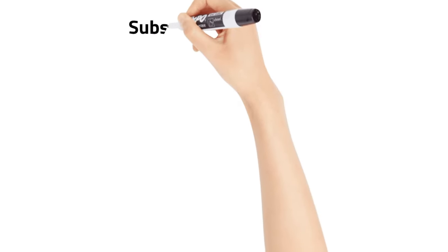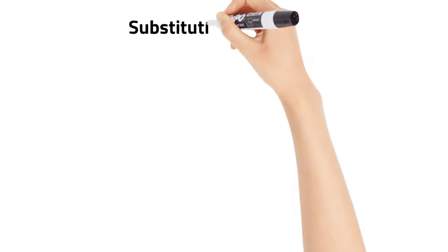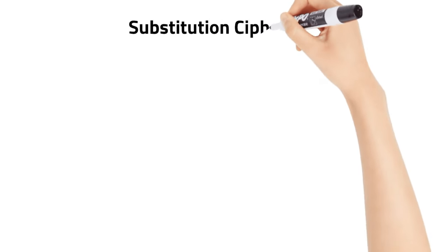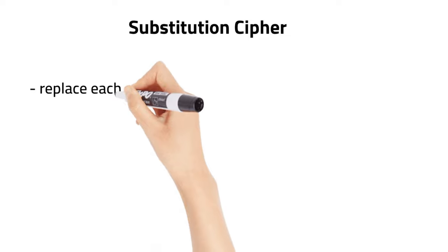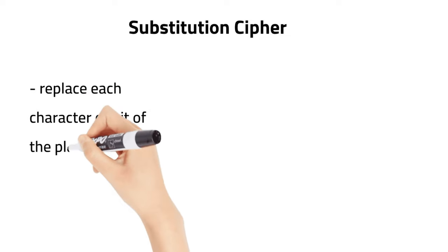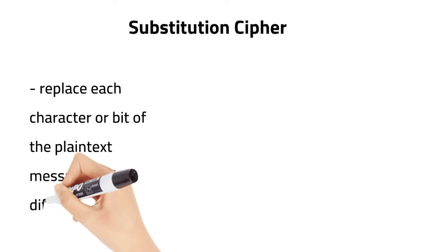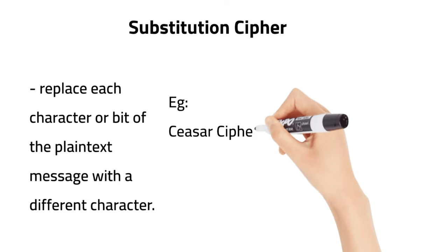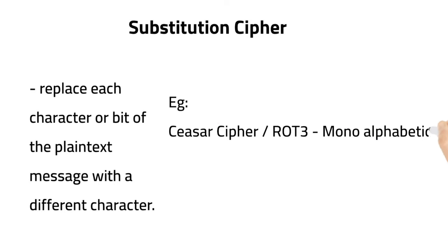Hi all, today we are going to see what is substitution cipher. It replaces each character or bit of the plaintext message with a different character. An example is Caesar cipher — another name for Caesar cipher is ROT3, which is mono-alphabetic.